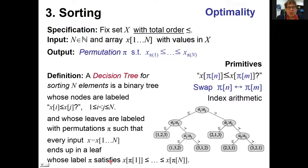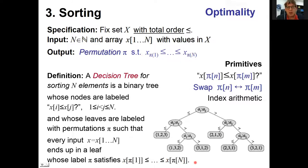Please verify that for all other possible inputs the leaf reached does sort the input array. If so, this is a decision tree for sorting three elements. For sorting four elements you'd need a different decision tree. There are many possible decision trees, one for each size N.